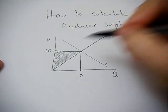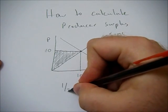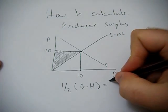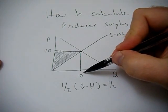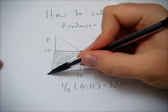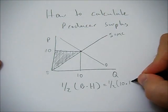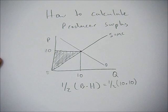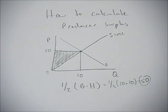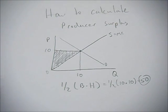So here it's just a triangle. Remember the equation of a triangle is half base times height. And so here the base of the triangle is 10. And the height of the triangle, 0 to 10 is 10. So 10 times 10, 100 times a half gives us 50. In this example of a perfectly competitive market we get a producer surplus of 50.